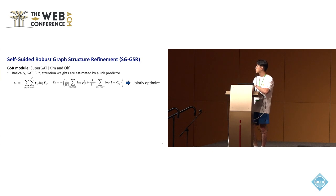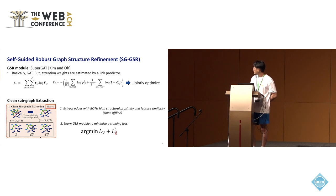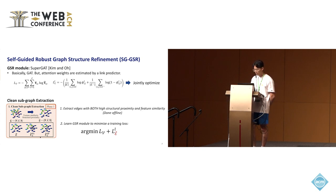We want the link predictor to assign low weights to adversarial edges and high weights to clean edges. To extract the clean subgraph from the given graph itself, we first find edges with both high structural proximity and feature similarity, which is done offline. We then extract those edges and train the GSR module to minimize the training loss combining node classification loss and link prediction loss, with the extracted subgraph as positive links.